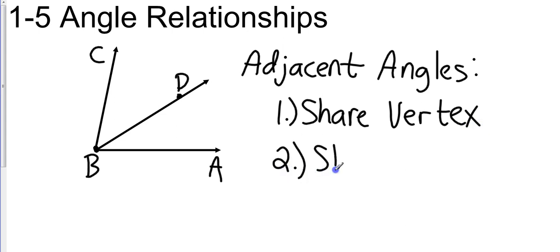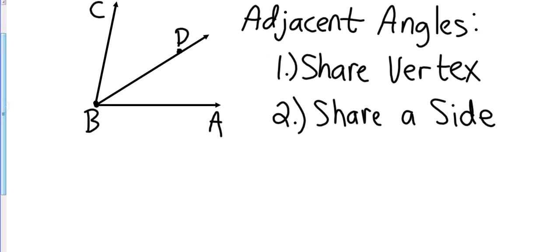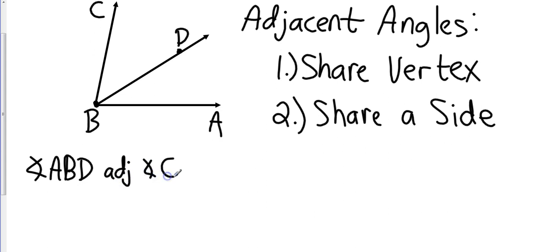Adjacent angles share two things: one, they share a vertex, and two, they share a side. The vertex that they share would be vertex B, and the side that they share would be side BD. So the adjacent angles in this case are the two smaller ones — angle ABD is adjacent to angle CBD. Remember to put your vertex in the middle; notice that the B is in the middle of both angle names.